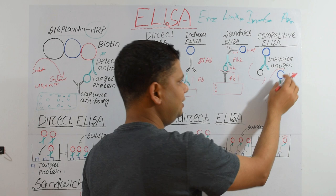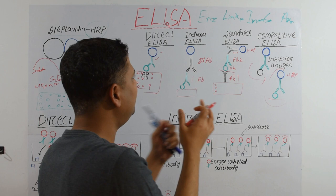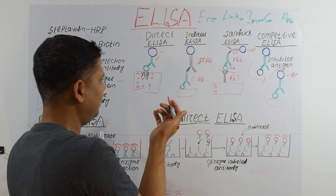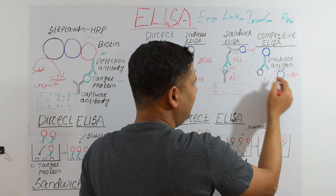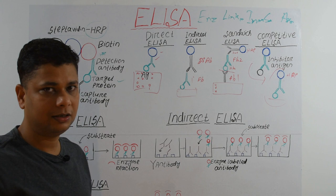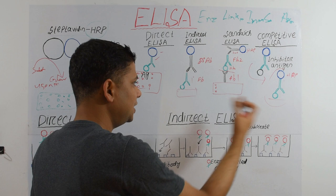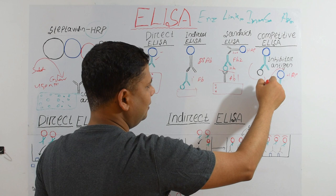In other ELISA types we detect maximum luminosity, but in Competitive ELISA we detect the reduction of color — the unknown antigen replaces the tagged antigen, so by measuring how much color is reduced we determine how much antigen or antibody is present in the sample. Competitive ELISA can be combined with any of the other types.